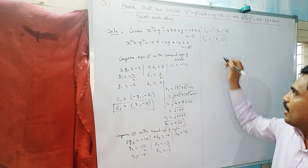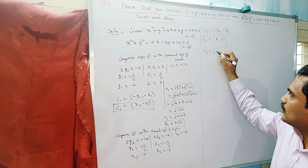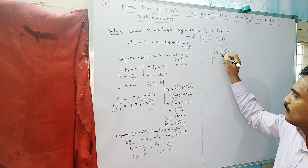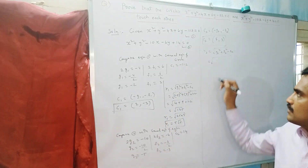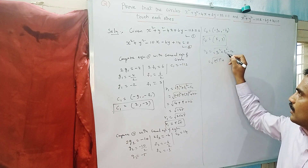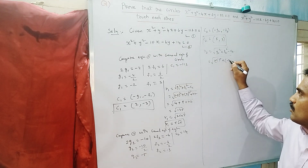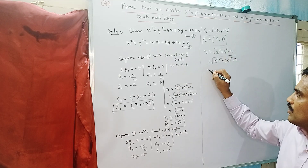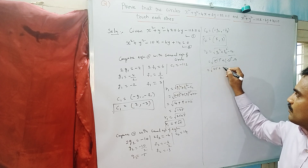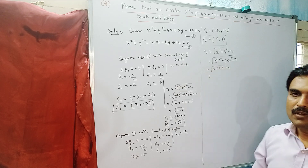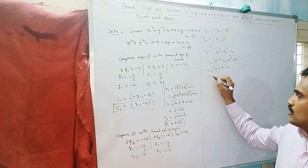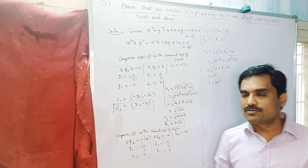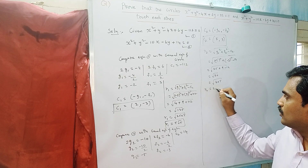Now find r2 using the formula r2 = √(g2² + f2² - c2). Substituting: g2 = -5, so (-5)² = 25; f2 = -3, so (-3)² = 9; and c2 = 14. So r2 = √(25 + 9 - 14) = √20. We can write 20 as 4 × 5, and since 4 = 2², we take 2 out. Therefore r2 = 2√5.